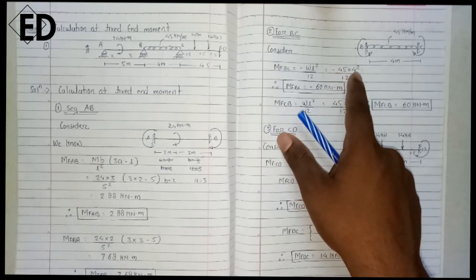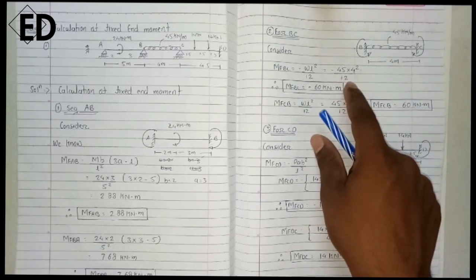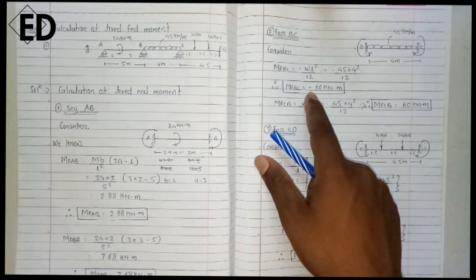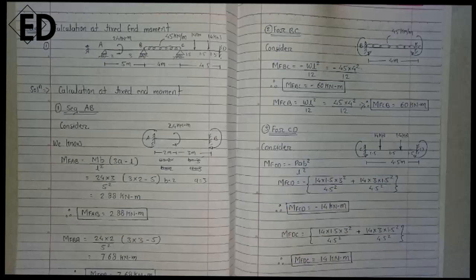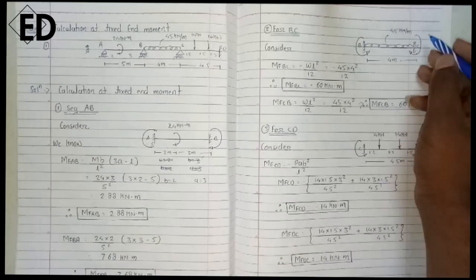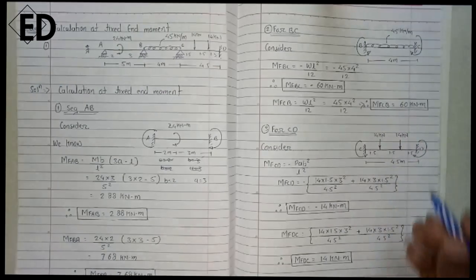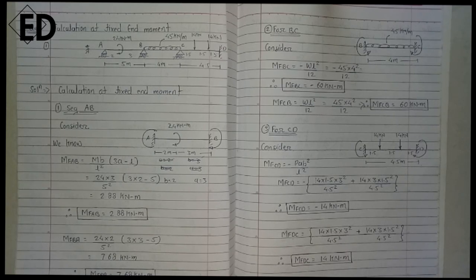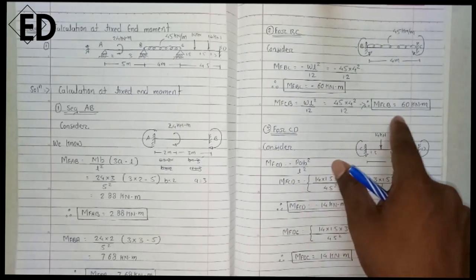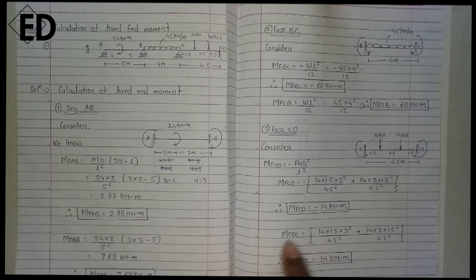The value of load is 45, L is 4, and dividing by 12 — by directly putting this value into our calculator, the fixed end moment from B to C is minus 60 kilonewton meters. Using the same formula for calculating the fixed end moment from C to B, here we are not taking a negative sign because the moment produced at support B is in the clockwise direction. All clockwise moments are positive, so putting all values into the equation we get positive 60 kilonewton meters.